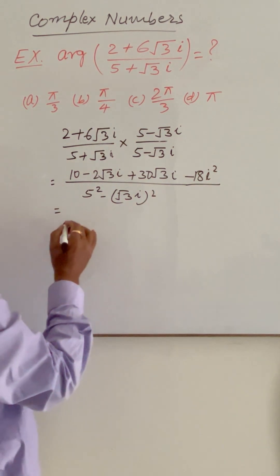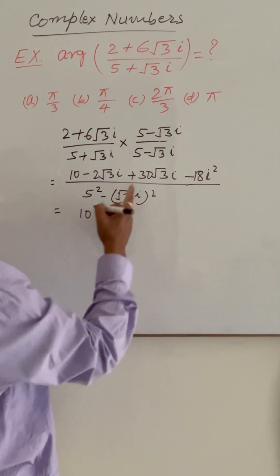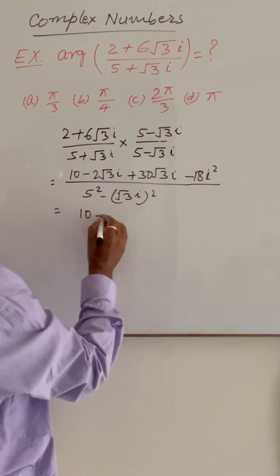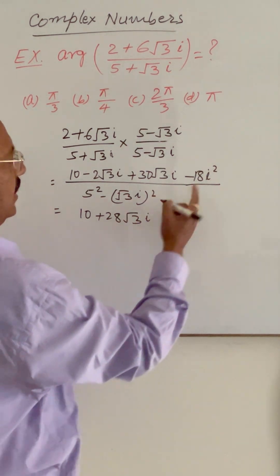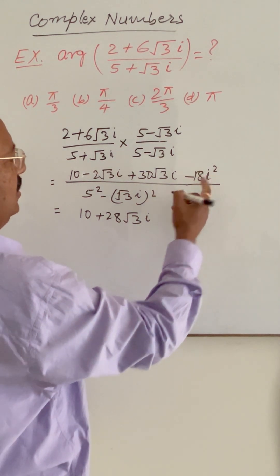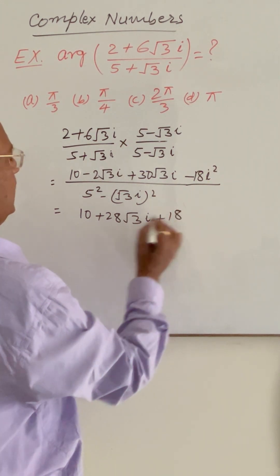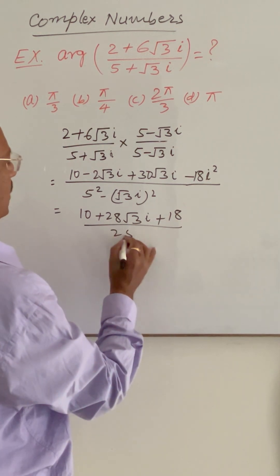And this is equal to 10, 30 minus 2 is 28 root 3i. And i square is minus 1. So this is plus 18 divided by 25.